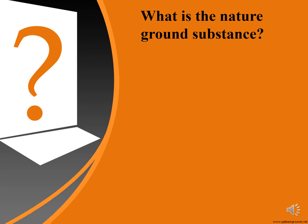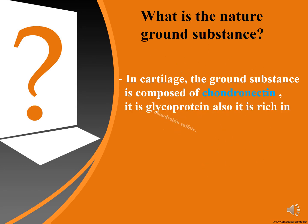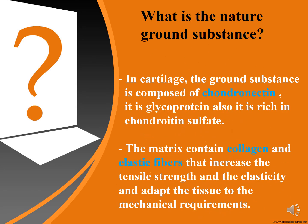What is the nature of the ground substance in cartilage? The ground substance is composed of chondronectin, which is a glycoprotein. It is also rich in chondroitin sulfates — materials that cause the rigidity of the cartilage matrix. The matrix also contains collagen and elastic fibers, which increase the tensile strength and elasticity of the tissue and adapt the tissue to its mechanical requirements.